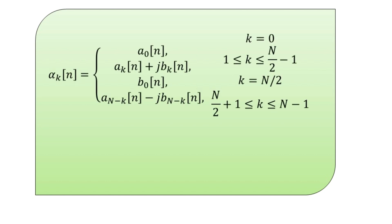We define a new set of complex sequences α_k(n) with length N equal to 2M according to the following relation: for k equal to 0, α_k(n) = a_0(n); for k between 1 and N/2 minus 1, α_k(n) = a_q(n) + j·b_q(n); for k equal to N/2, α_k(n) = b_0(n); and for k between N/2 plus 1 and N minus 1, α_k(n) = a_{N-k}(n) − j·b_{N-k}(n).